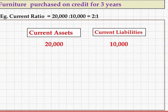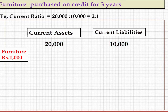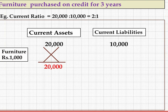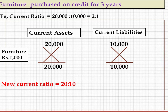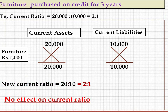What if furniture is purchased on credit for 3 years? With current assets 20,000 and current liabilities 10,000 (2:1), buying furniture does not affect current assets since furniture is a non-current asset. And since the payment will be made after 3 years, it creates a long-term liability — not a current liability — so current liabilities remain 10,000. The ratio remains 2:1, meaning there is no effect on the current ratio when fixed assets are purchased on long-term credit.